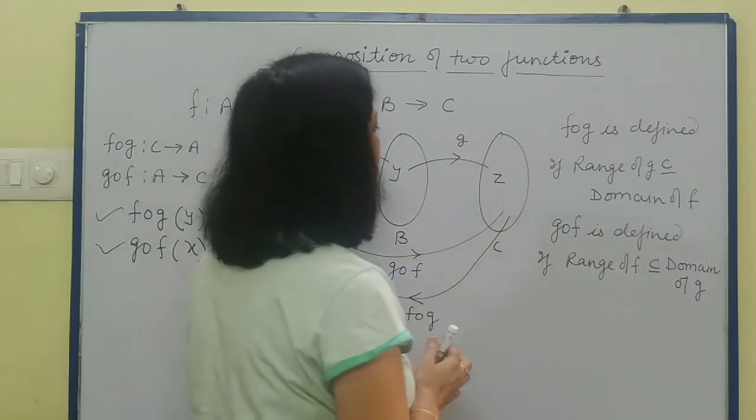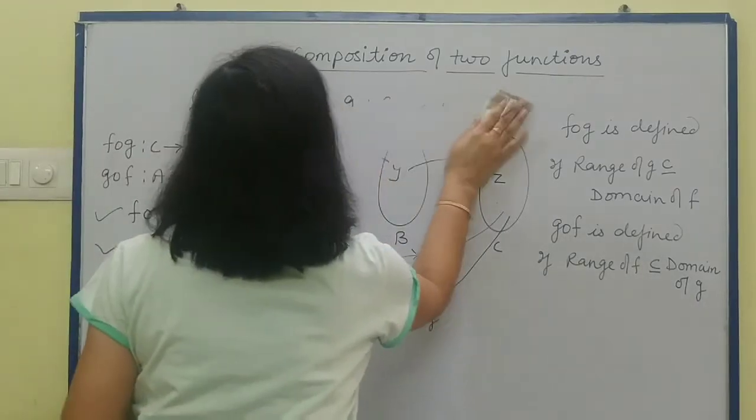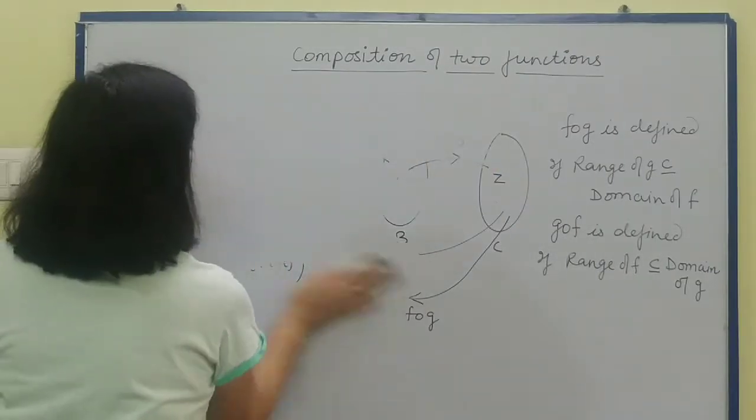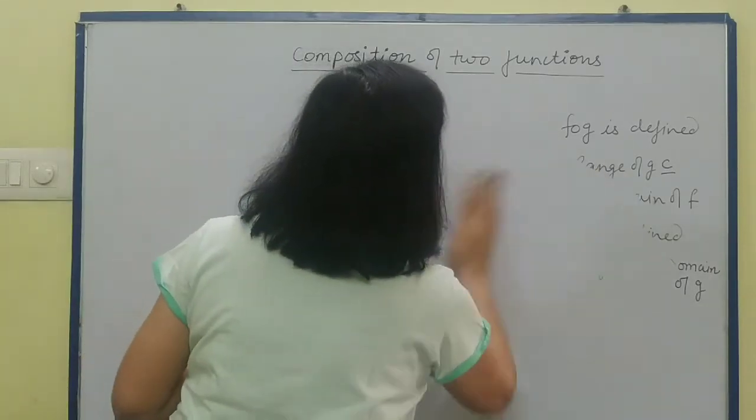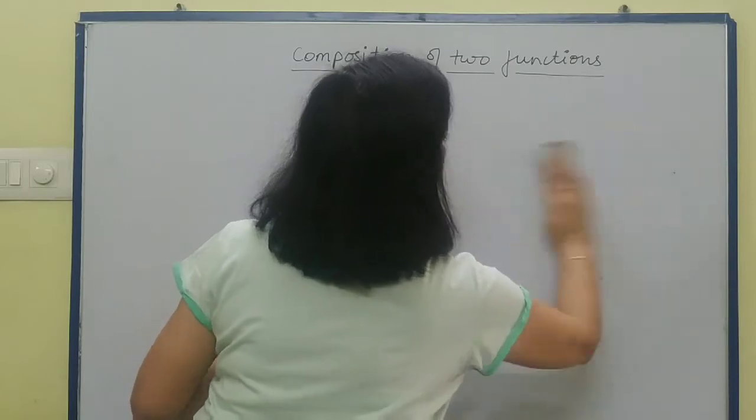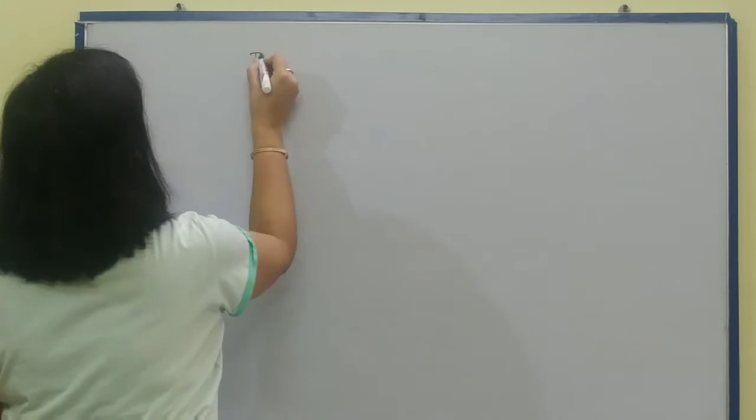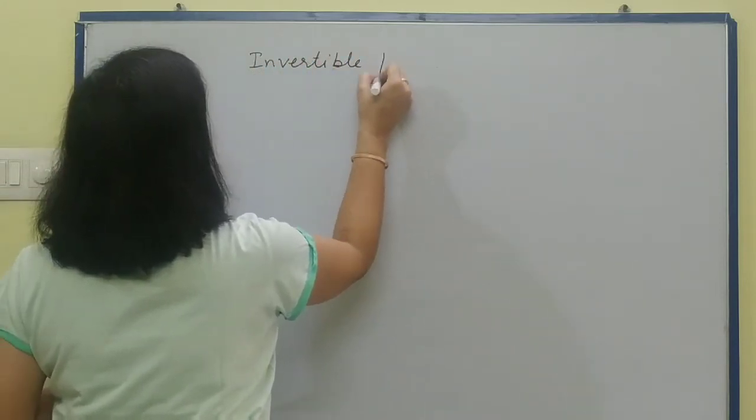Now let's see the definition of invertible functions. What is invertible function? Here we have taken functions in separate sets, f from A to B and g from B to C.